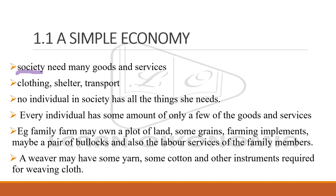Each and every individual in the economy has different needs and wants. They may need a lot of goods as well as services — for example, clothing, shelter, transport, etc. No individual in the society has all these things. A person in an economy is not able to cultivate all the crops that he or she needs.